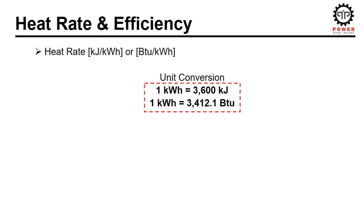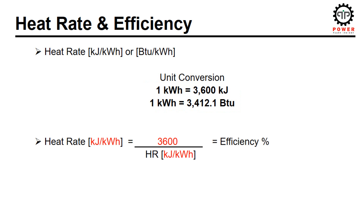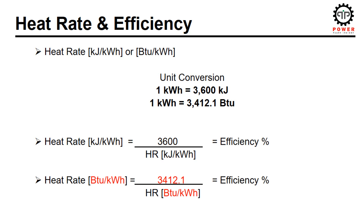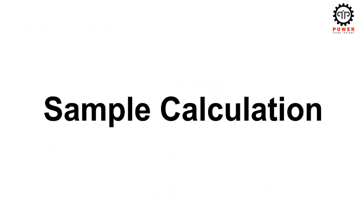One kilowatt-hour is equal to 3600 kJ, and in terms of BTUs it is 3412.1 BTUs. If the resultant value of heat rate is in SI units, we divide 3600 by the value of heat rate to get the efficiency numbers. If the heat rate is in BTU per kWh, then the value of 3412.1 will be used in the numerator.